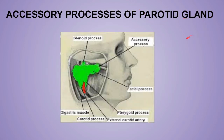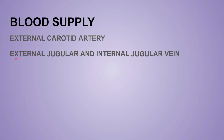The accessory processes of the parotid gland are mainly four: (1) the facial process, which lies along the parotid duct between the zygomatic arch and the parotid duct; (2) the pterygoid process, present between the mandibular ramus and the medial pterygoid; (3) the glenoid process, present between the external acoustic meatus and the temporomandibular joint; and (4) the post-styloid process. The gland is mainly supplied by the external carotid artery and drains into the external jugular vein and the internal jugular vein.